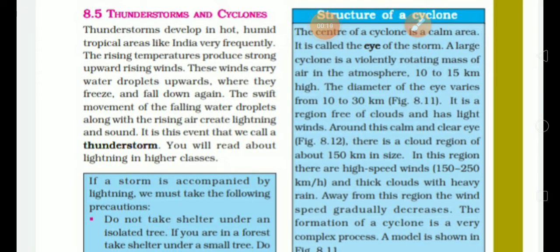Firstly, do you remember how convectional currents are set up? Actually, thunderstorms develop similarly. A few things necessary for the development of thunderstorms are the heat of the sun and the presence of moisture in the air. Thunderstorms develop in hot, humid and tropical areas like India very frequently.